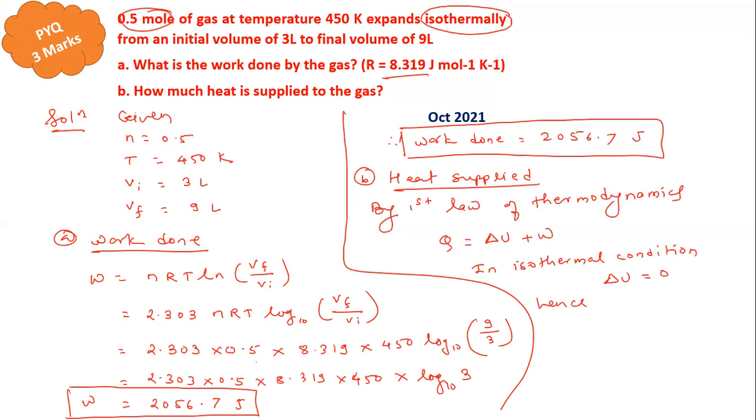So here we can write Q = W. Heat supplied is equal to work done, and we know the work done is 2056.7 joules. So heat supplied is also 2056.7 joules, and this is the answer for this question.